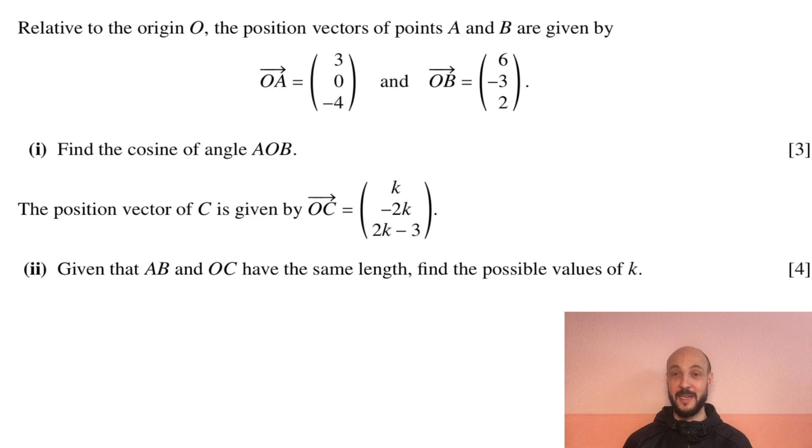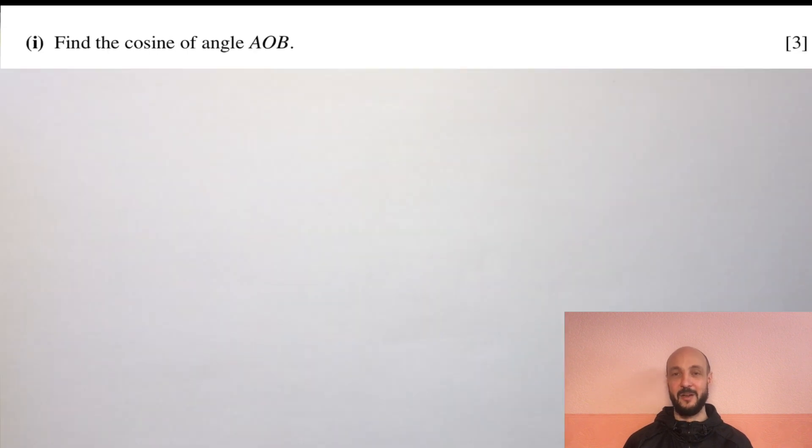Part 1: Find the cosine of angle AOB. The position vector of C is given by OC equals K minus 2K, 2K minus 3. Part 2: Given that AB and OC have the same length, find the possible values of K.